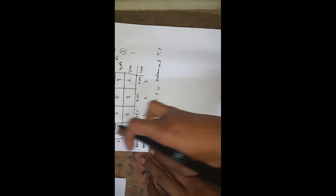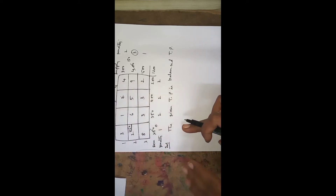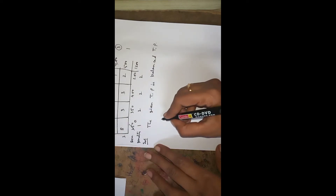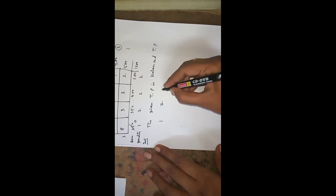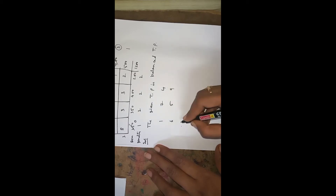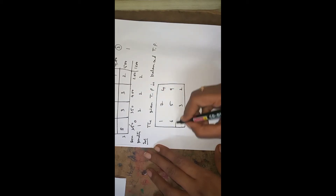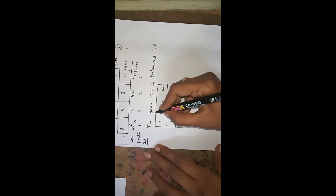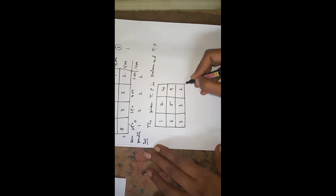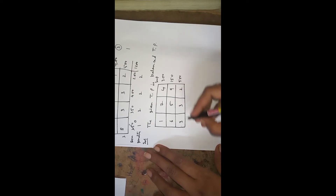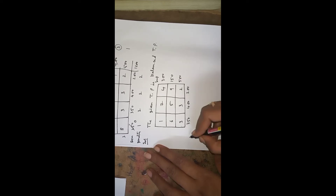Wherever you get 0, just omit that particular row or column. Here we got 0 in the first column, so I am omitting it. The remaining matrix is written with values 1, 7, 4, 6, 5, 9, 3, 3, 2. Supplies are 300, 150, 500, and demands are 350, 400, 200.